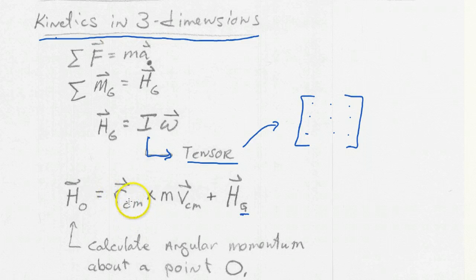is really just this R, where R is the vector between this point and the mass center, crossed with the mass times the velocity of the center of mass plus the angular momentum at the mass center. So this was the basics for kinetics in three dimensions.